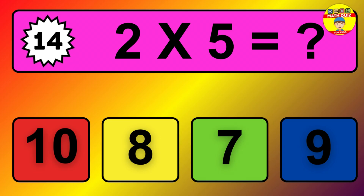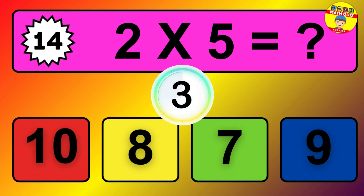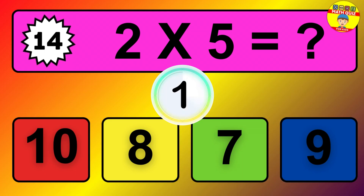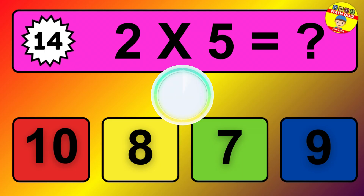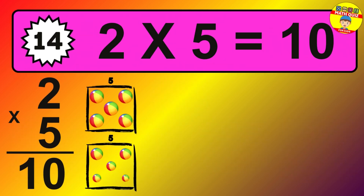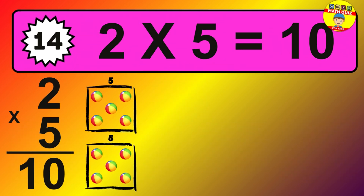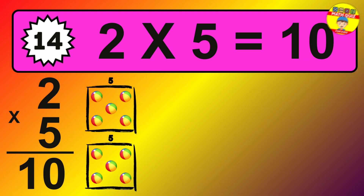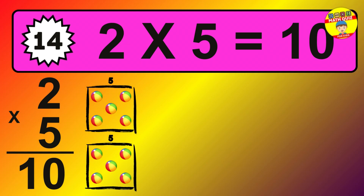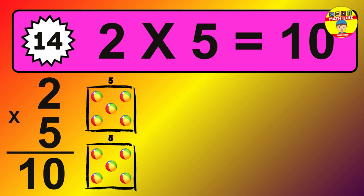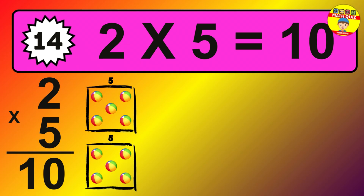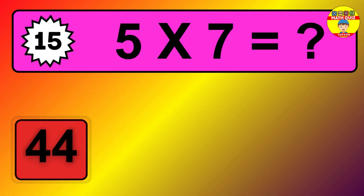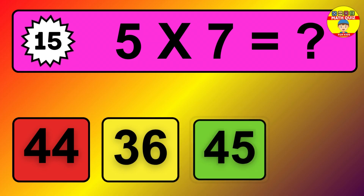Question 14. 2 times 5 equals what? The answer is 2 times 5 is 10. To calculate, we have 2 groups with 5 balls each one. So, how many balls do we have? 10 balls.